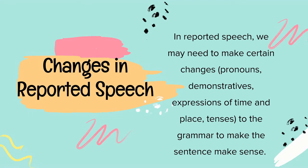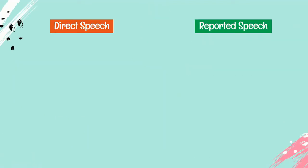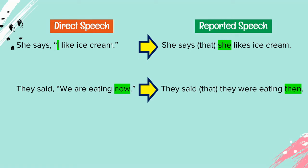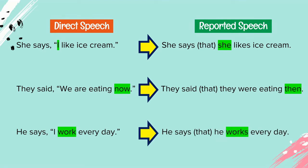Next, changes in reported speech. We may need to make certain changes — like pronouns, demonstratives, expressions of time and place, or tenses — to make the sentence make sense. In direct speech: 'She says I like ice cream,' but in reported speech: she says that she likes ice cream. They said 'We are eating now' becomes they said that they were eating then. He says 'I work every day' becomes he says that he works every day. The changes are in pronoun, expression of time, and tense.